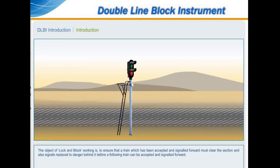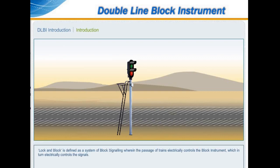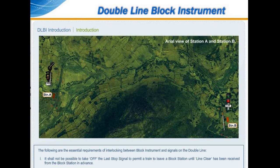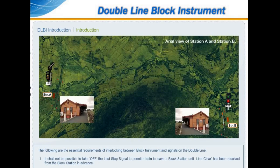The object of lock-and-block working is to ensure that a train which has been accepted and signalled forward must clear the section, and also that signals replace to danger behind it before a following train can be accepted and signalled forward. Lock-and-block is defined as a system of block signalling wherein the passage of trains electrically controls the block instrument, which in turn electrically controls the signals. The following are the essential requirements of interlocking between block instrument and signals on the double line.